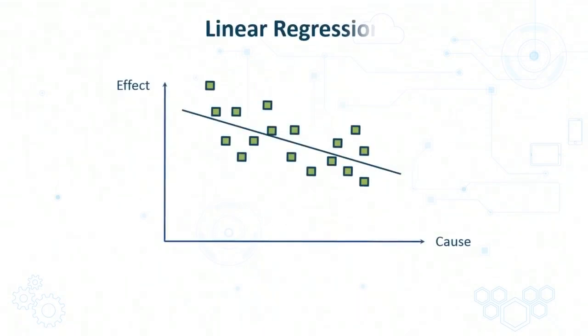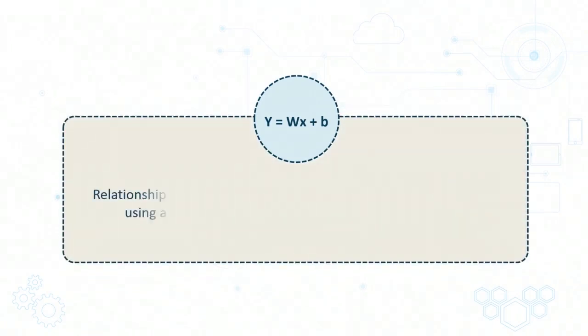To begin, let us take a look at an example which we have studied so far, where we have a linear regression line which plots the relationship between a particular cause x and an effect y. The point of linear regression is to find a best fit straight line which models such a relationship, and this is expressed by the equation y equals wx plus b. In a linear regression, the aim is to find those values of w and b which best represent your data.